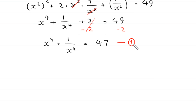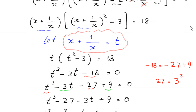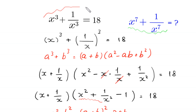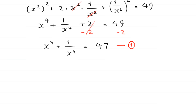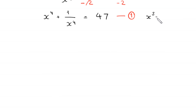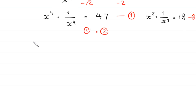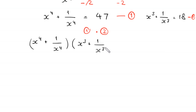The given equation x cubed plus 1 over x cubed is equal to 18, let us call this equation 2. To find the value of x to the power 7 plus 1 over x to the power 7, we multiply equation 1 and equation 2. So this will become x to the power 4 plus 1 over x to the power 4 times x cubed plus 1 over x cubed is equal to 47 times 18, which is 846.